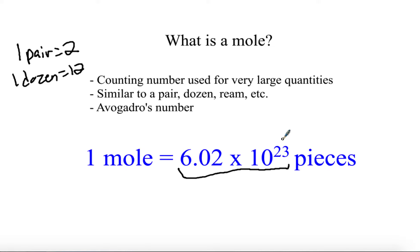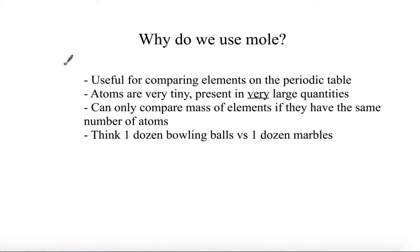Why do we use moles? Elements on the periodic table have different masses, so if we're comparing different elements, just going based on masses may not be the right way because they have different masses. Additionally, atoms are really tiny particles, and because of that they usually appear in very large quantities. The mole helps count atoms so we can compare elements and compare the quantity of atoms.